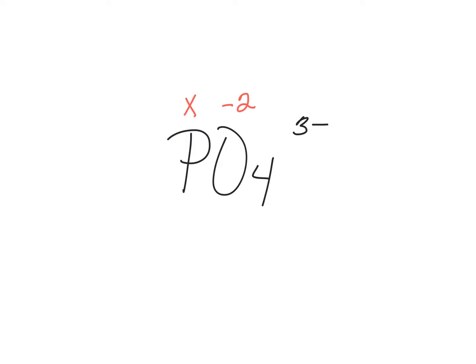So as we did before, we say we have 1 phosphorus — remember, there's no subscript, so it's a 1 — times X, plus there are 4 oxygen atoms, which we can tell from the subscript, times the oxidation number of each of those atoms, which is minus 2. When we add those together, it's going to equal minus 3, because that is the overall charge on this polyatomic ion.